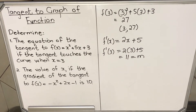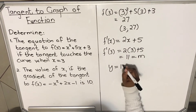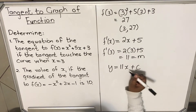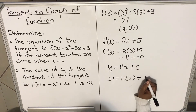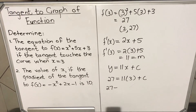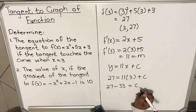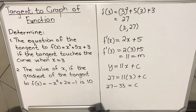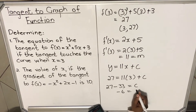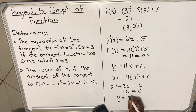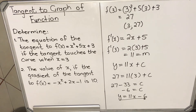Now you must find c using the equation y = mx + c. Your gradient m is 11, so the equation is y = 11x + c. Substituting the coordinates: 27 = 11 times 3 plus c. That gives 27 minus 33 equals c, so c = -6. The equation of the tangent is y = 11x minus 6.